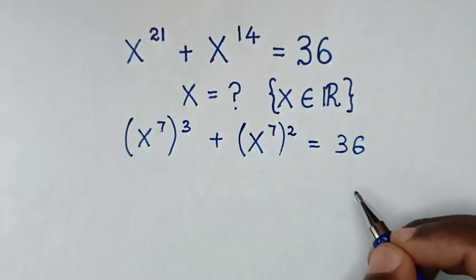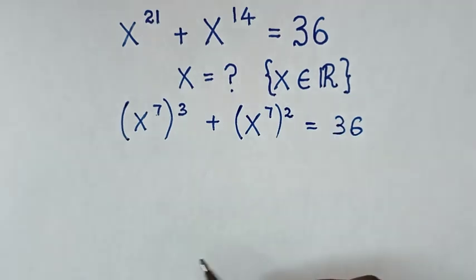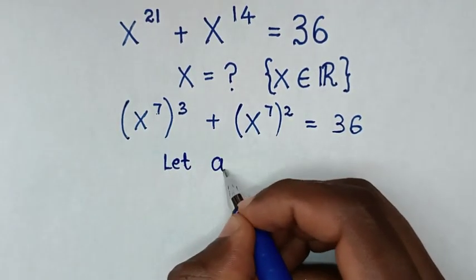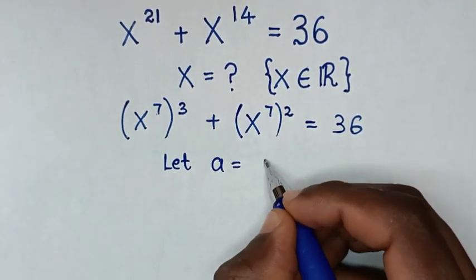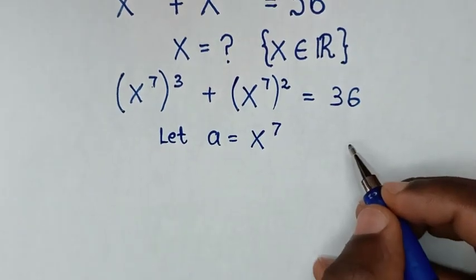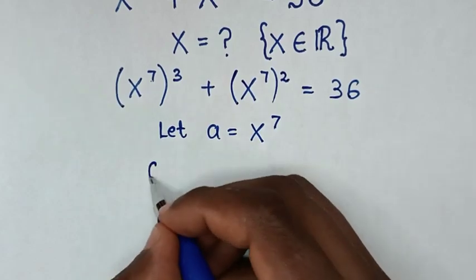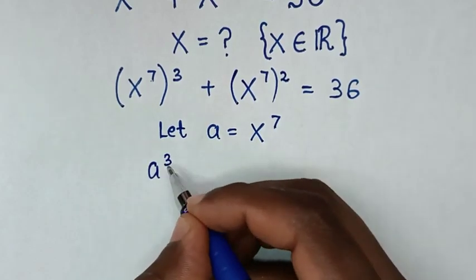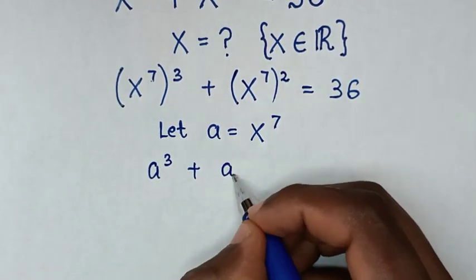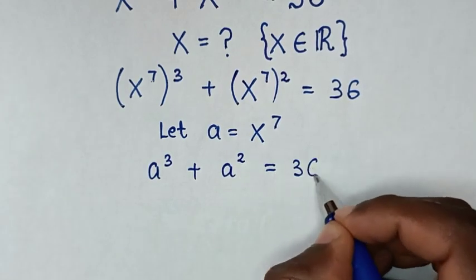In the next step, x power of 7 is common, so we let a equal to x power of 7. Our equation then becomes a power of 3 plus a power of 2 is equal to 36.